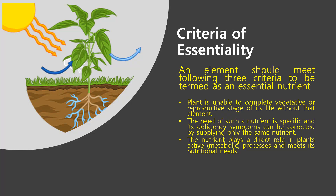Criteria of essentiality. Plants need food for their growth and development like other living things. Humans and animals depend on plants for their food but plants can produce their food from natural raw materials. Sixteen elements have been found to be indispensable for plant growth, development, and reproduction. An element should meet the following three criteria to be termed as an essential nutrient: (1) the plant is unable to complete its vegetative or reproductive stage without that element; (2) the need for such a nutrient is specific and its deficiency symptoms can be corrected by supplying only the same nutrient; (3) the nutrient plays a direct role in the plant's active metabolic processes and meets its nutritional needs.